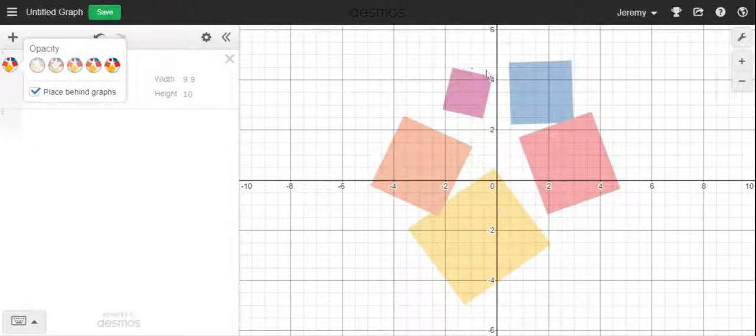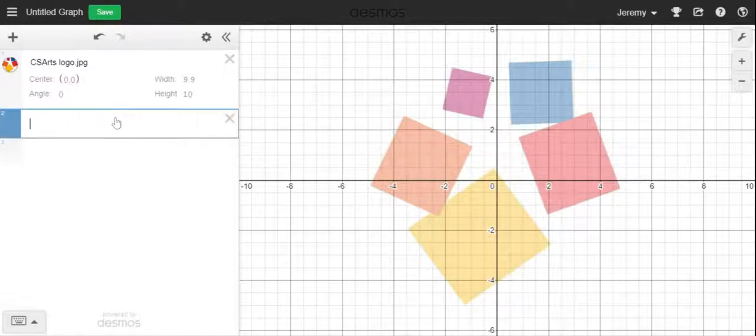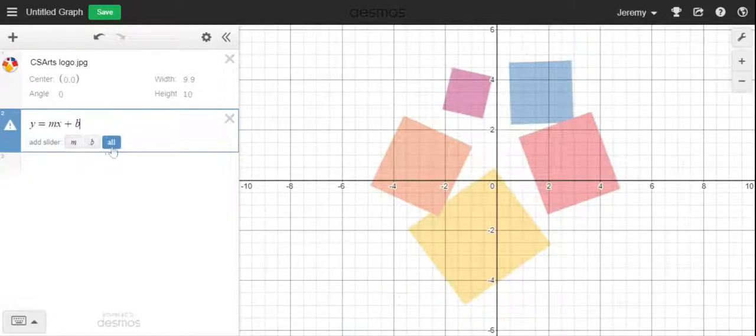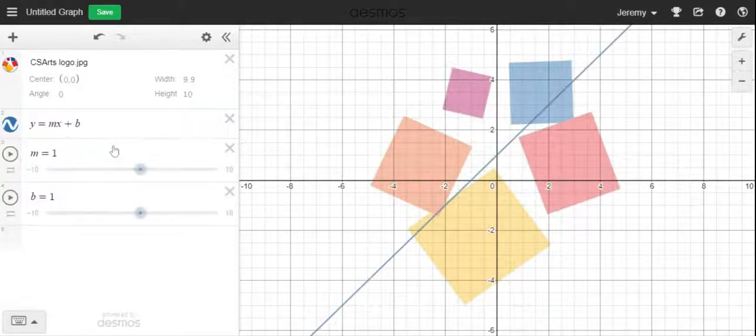This is a square which has four line segments. In order to make the line segments first I need to make lines that fit those. So I know that all lines have the form y equals mx plus b, so I'm starting there. It asks me do I want to add sliders? Of course I do.